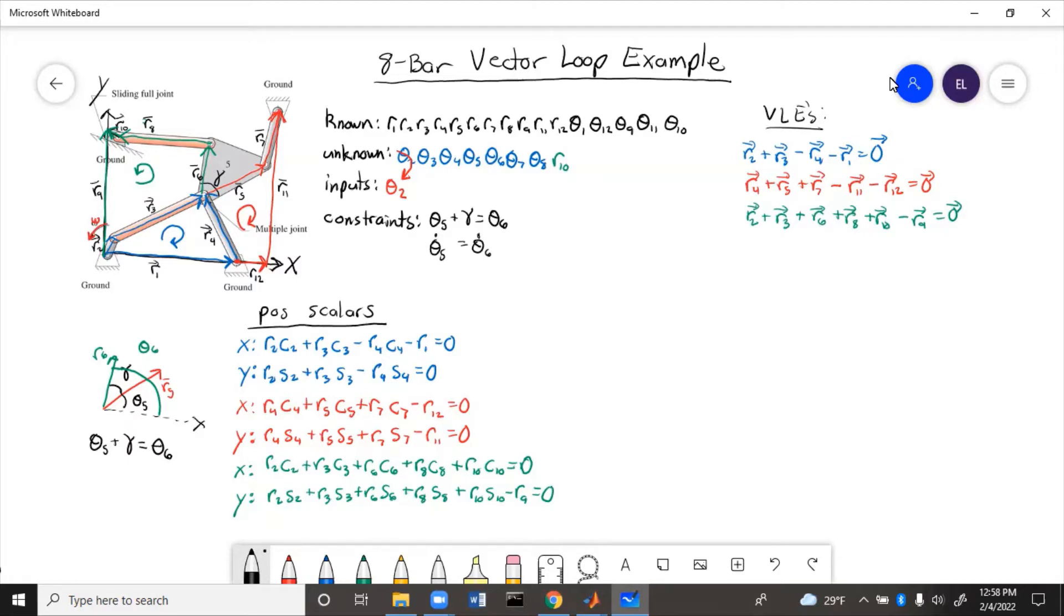So now we need to get velocity. In that equation, r1 doesn't have a derivative because it's constant. And the derivative of cosine is minus sine. So now we'll do the y equation, derivative of sine is cosine. So this will look similar.